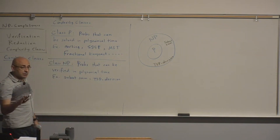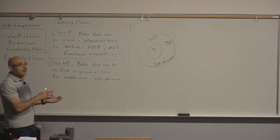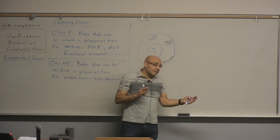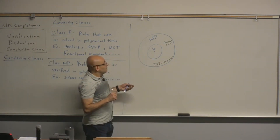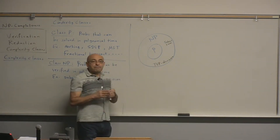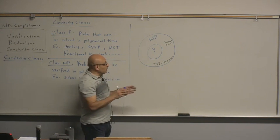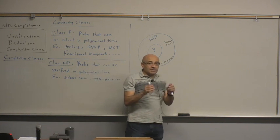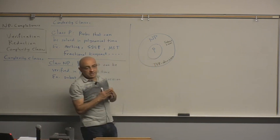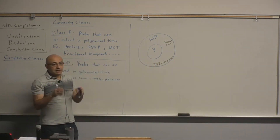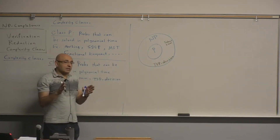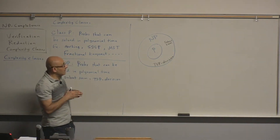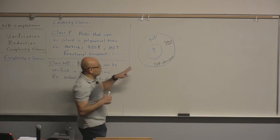If someone gives you a proposed solution, you can verify if it's indeed a solution that meets the target. But there is no polynomial time algorithm that, given an instance of the problem, determines if there is a solution that meets the target or not — there is no algorithm that can decide this problem.